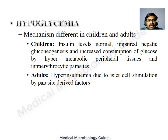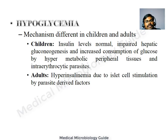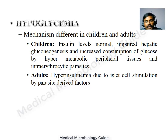Hypoglycemia is a complication of falciparum malaria. The mechanism differs between children and adults. In children, insulin levels are normal; hypoglycemia is due to impaired hepatic gluconeogenesis, increased glucose consumption due to the hypermetabolic state of peripheral tissues, and glucose utilization by the parasite. In adults, the parasite stimulates islet cells to produce more insulin, leading to hyperinsulinemia and hypoglycemia.